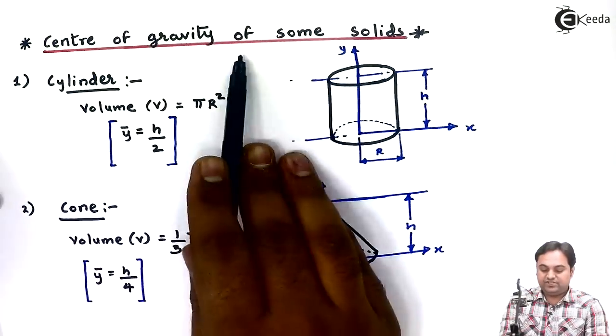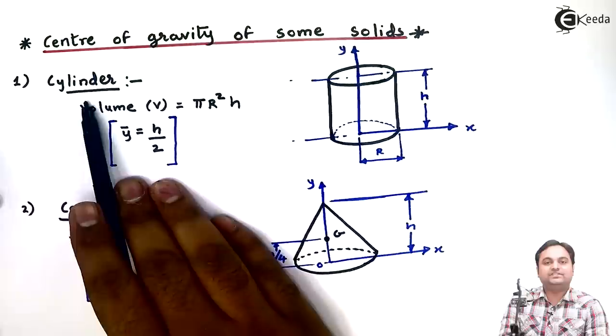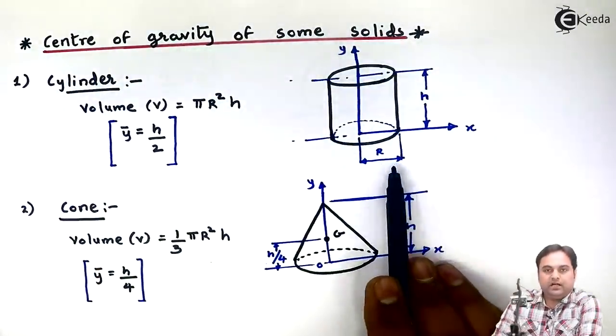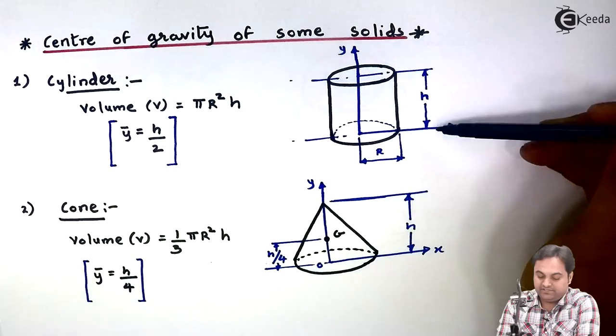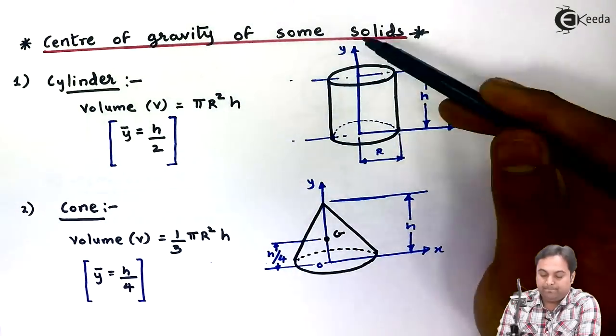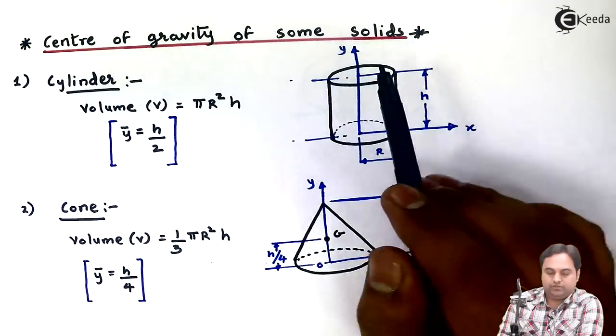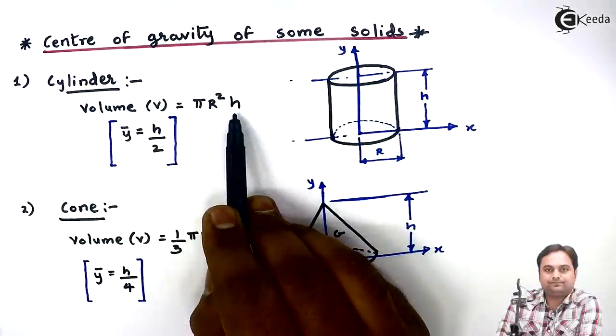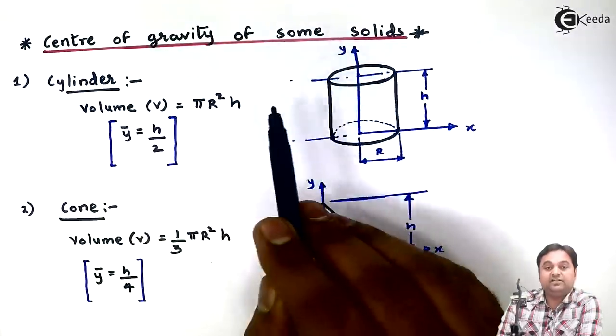Let us start with the CG of some solids. The first one is the cylinder. Here we have a cylinder whose radius is capital R and height of the cylinder is H. It is placed on an axis system X and Y.